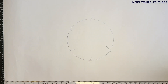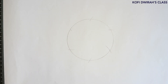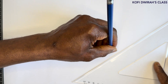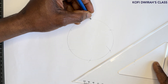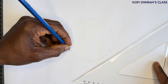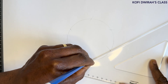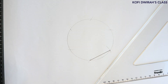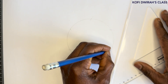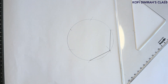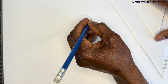After marking all the arcs, just join the points — draw straight lines to get your hexagon. We are going to draw straight lines through these intersections here, here, and here. From each intersection point, draw a straight line to the next.